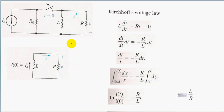Hello there. In this video, we're going to be talking about the natural response of RL and RC circuits. When we're talking about natural response, we're talking about the current and the voltage that arise from an inductor or a capacitor releasing their energy. Passive elements cannot create energy, but they can store it. We're going to be using Kirchhoff's voltage law and Kirchhoff's current law to find the current relationship in the inductor and the voltage relationship in the capacitor.